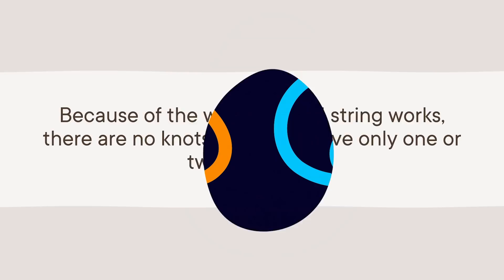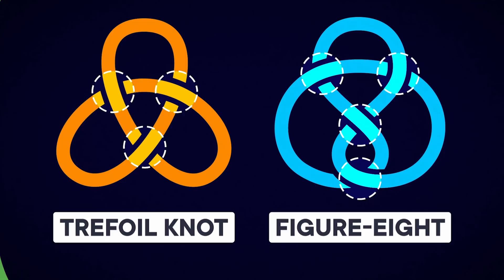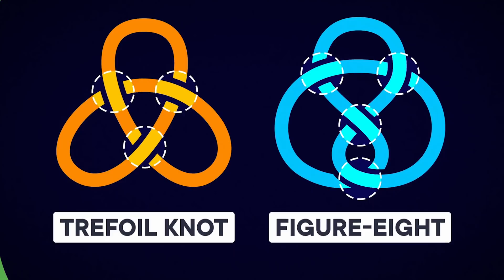Because of the way a looped string works, there are no knots at all that have only one or two crossings. There is one knot with three crossings called the trefoil knot, and one with four called the figure eight. So far, so simple.